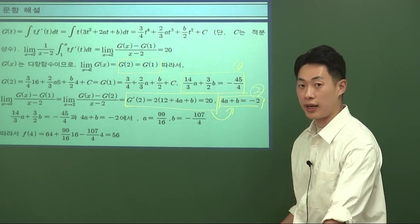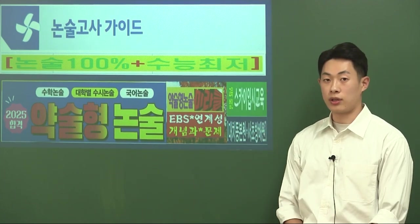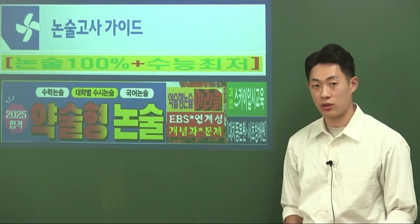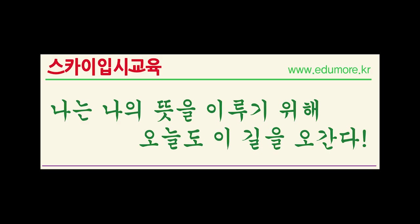14번을 보겠습니다. 실수 m에 대하여 수직선 위를 움직이는 점 P의 시각 t에서의 위치가 주어져 있습니다. 위치를 t에 대해 미분한 v(t)는 6t⁴ - 20t³ + 12t² + 6 - m으로 나옵니다. 점 P가 t=0일 때 원점을 출발하고 운동 방향이 두 번만 바뀐다고 했으므로, v(t) 그래프가 t축과 서로 다른 두 점에서 만나야 합니다.